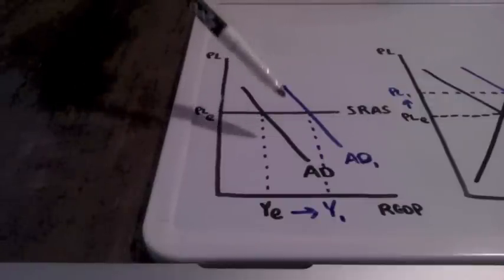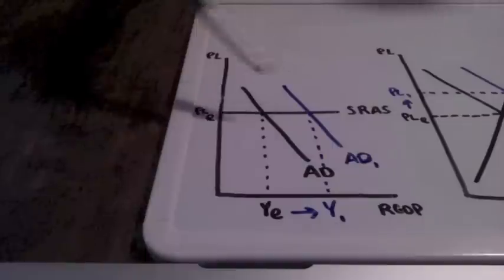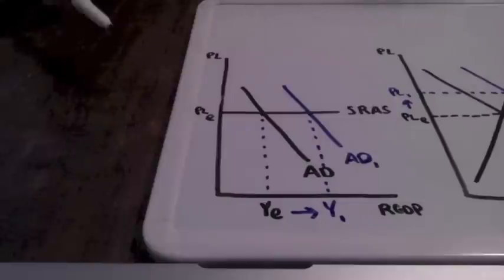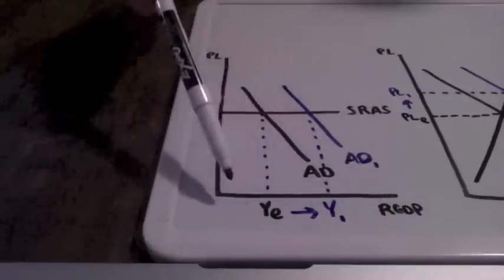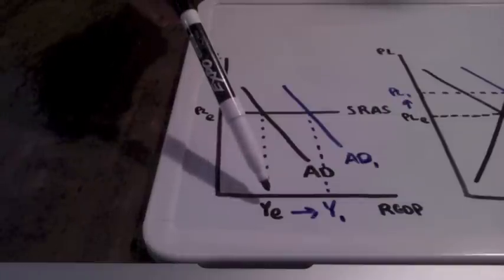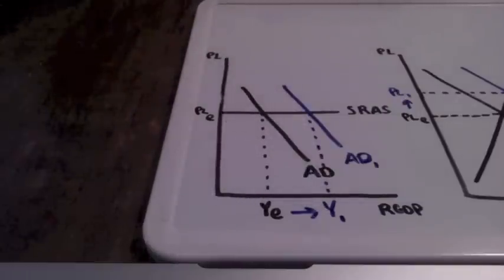When aggregate demand shifts to the right our price level stays constant but our real GDP is going to increase from the equilibrium point to Y1.